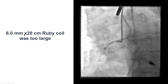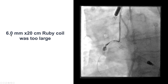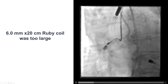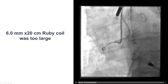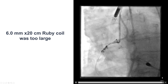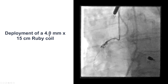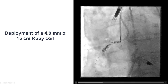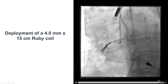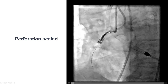We needed something more, so we had our interventional radiologist come up — he brought a larger coil. This was a 6x20 detachable coil, so if we didn't like the location we could retrieve it. We tried to deploy it but it was too long, so we took it out. We then came in with a 4.2x15 cm Ruby coil, which was packed tightly into the right coronary artery, and eventually achieved hemostasis.